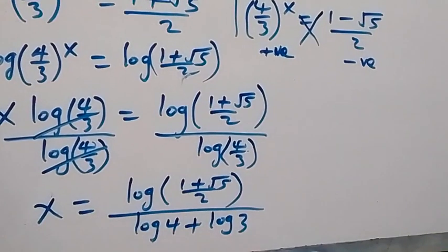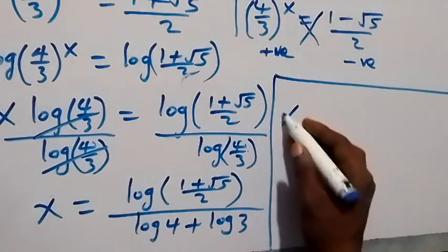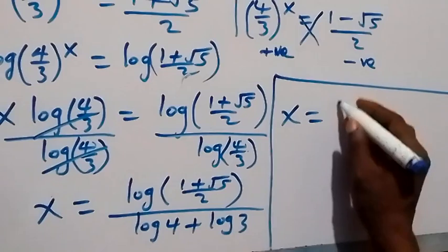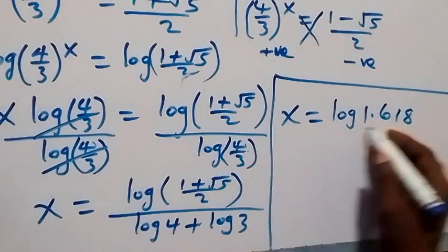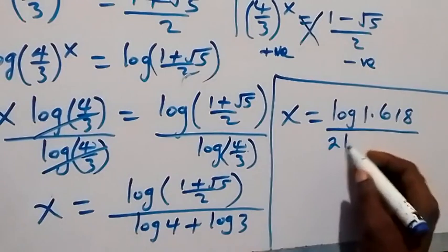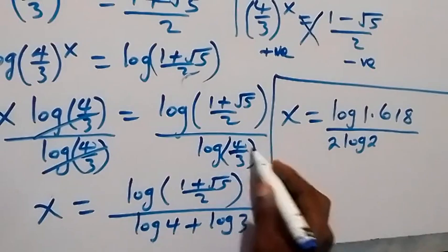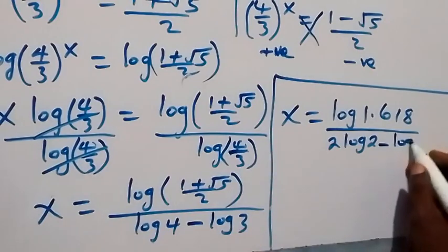Writing x in decimal form: log(1.618) in the numerator. Note that log 4 equals 2 log 2 — and since the denominator uses division, this becomes 2 log 2 minus log 3. We then have x equals log(1.618) divided by (2 log 2 minus log 3).